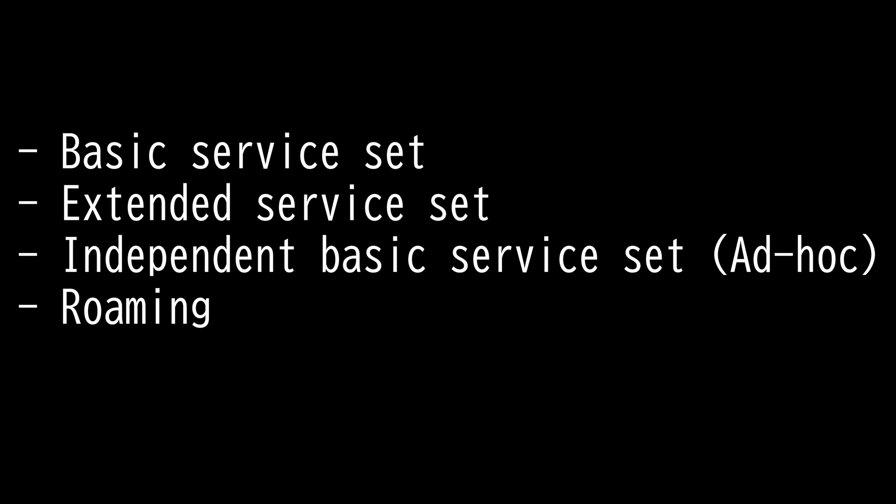When the wireless client is configured to operate in infrastructure mode, the user can choose a wireless access point with which to connect. This process can be automatic, with the access point selection based on SSID, signal strength, and frame error rate. Then the wireless adapter switches to the assigned channel of the selected wireless access point and negotiates the use of a port.